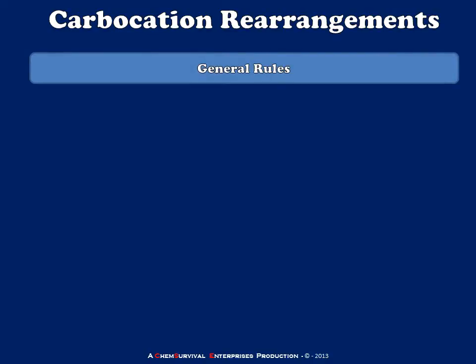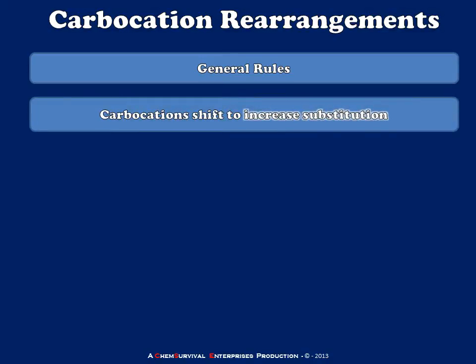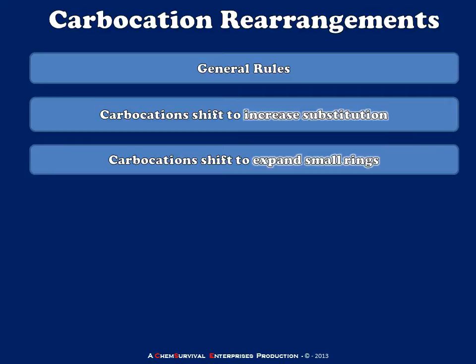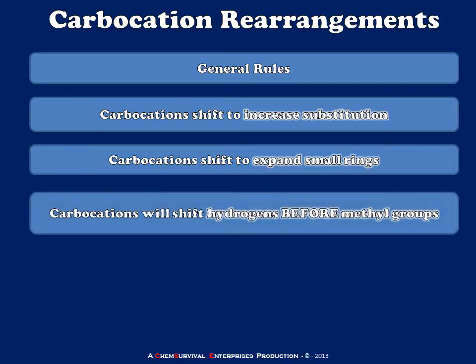Let's go over a few general rules about carbocation rearrangements. The first rule is that carbocations always shift to increase their substitution — if they don't relieve some kind of strain or get an energetic benefit, they're not going to rearrange. The other instance in which rearrangements occur is to expand small rings, like cyclopropyl and cyclobutyl rings. Also keep in mind that the energy required for a hydride shift is less than that required for a methyl or alkyl shift, so hydride shifts will occur before an alkyl shift. If there's a possibility for both, we always go with hydrogen.